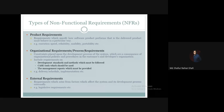Organizational process requirements specify which development standards and methods must be used or followed, which case tools should be used, and what management reports must be provided. Organizational requirement examples include delivery and schedule requirements, implementation requirements, and standard requirements.